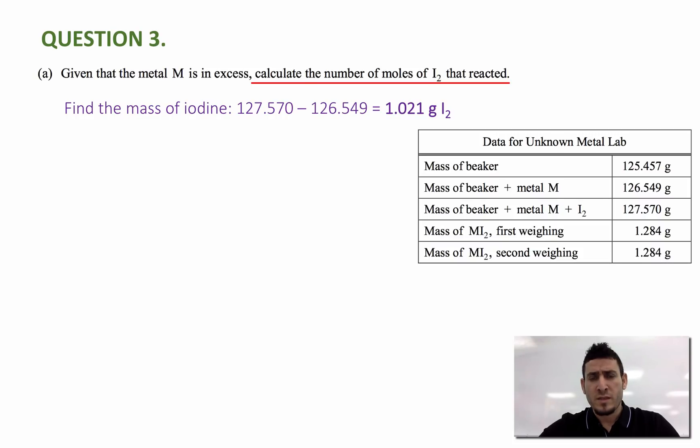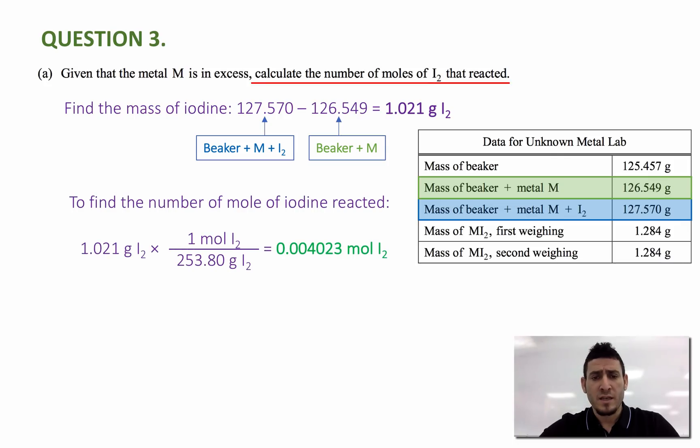So what is 127.570? That's the mass of beaker plus the metal M plus iodine. And the 126.549, this is the mass of the beaker plus metal M. So I can take this from the table. And now that I have the mass of iodine, I can simply divide by the molar mass and get the number of mole. The number of mole equals to 0.004023. Regarding the significant figures, my answer is reported in four significant figures.